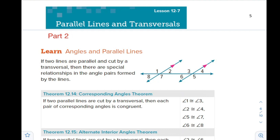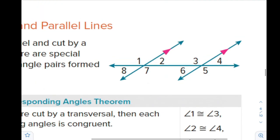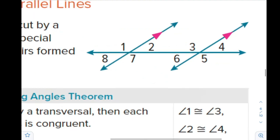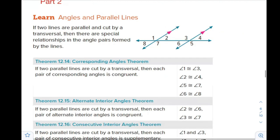We said that if a transversal cuts two lines, then we have eight angles formed. These eight angles have relations: either corresponding, alternate interior, alternate exterior, consecutive interior angles, or same side interior angles. For this lesson, we will study if the lines that were cut were originally parallel.